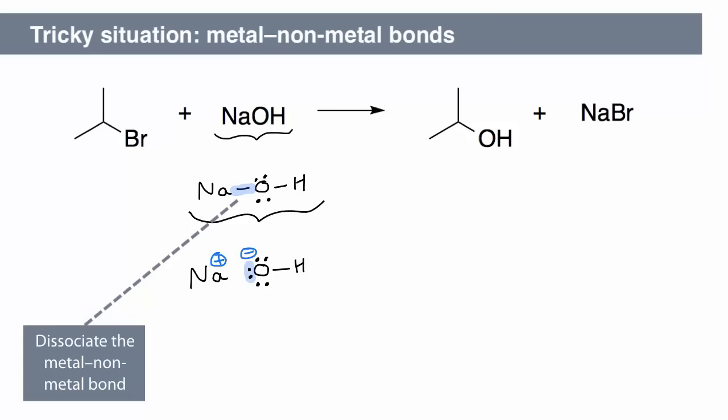If you dissociate the Na and Br, what is the charge on each atom? The sodium again has a positive charge. The bromine has a negative charge.